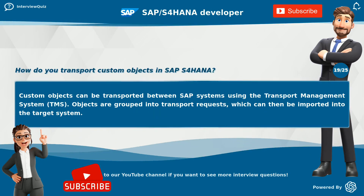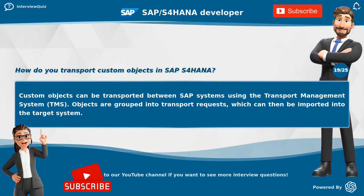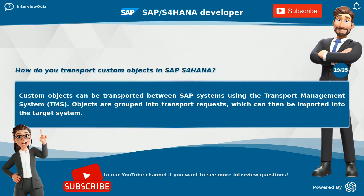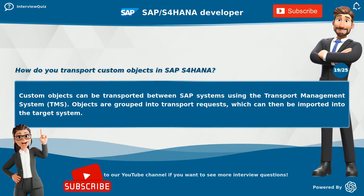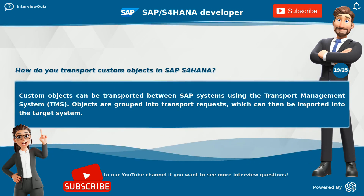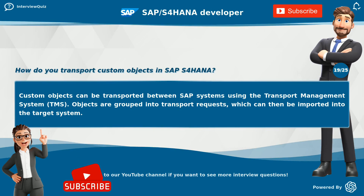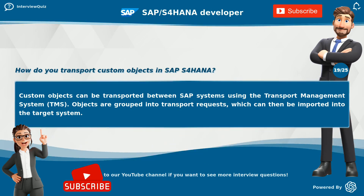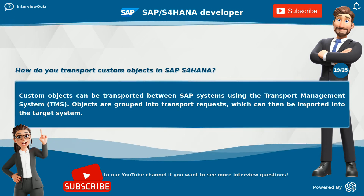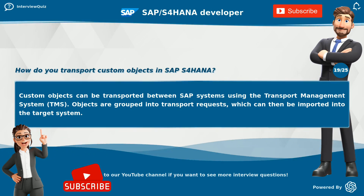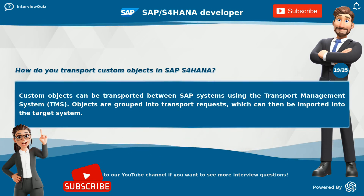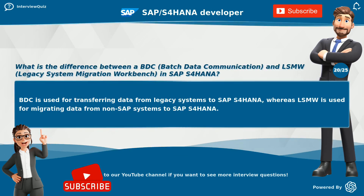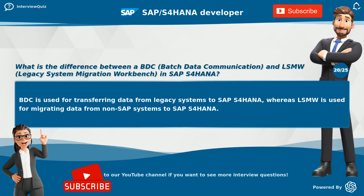How do you transport custom objects in SAP S4 HANA? Custom objects can be transported between SAP systems using the Transport Management System. Objects are grouped into transport requests, which can then be imported into the target system.